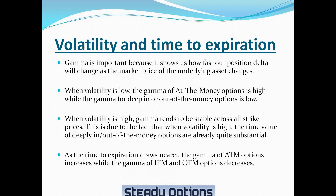When volatility is low, the gamma of at-the-money options is high, while the gamma for deep in or out of the money options approaches zero. The reason is that when volatility is low, the time value of such options is low, but it rises dramatically as the underlying stock price approaches the strike price.